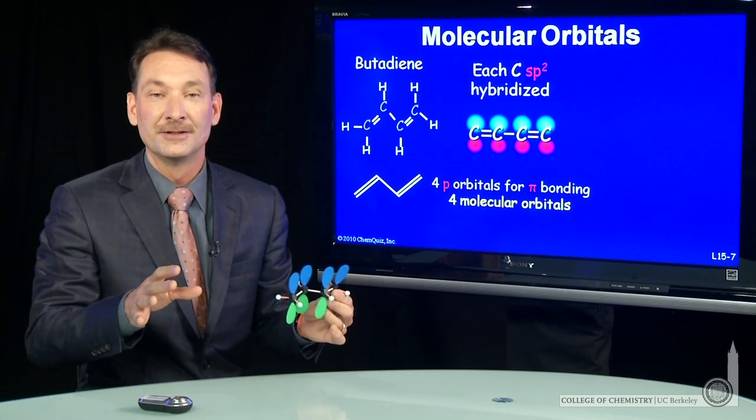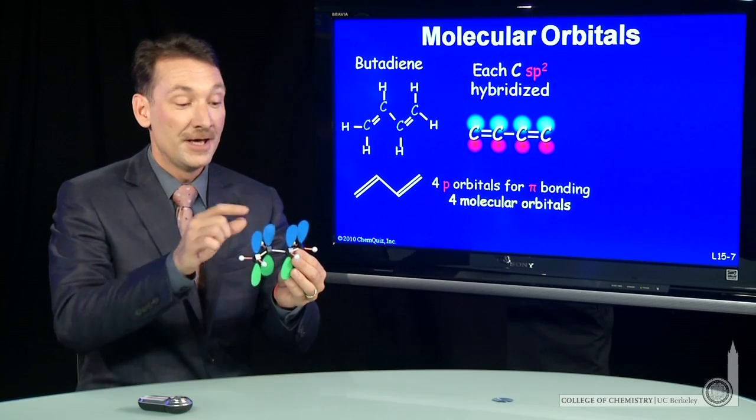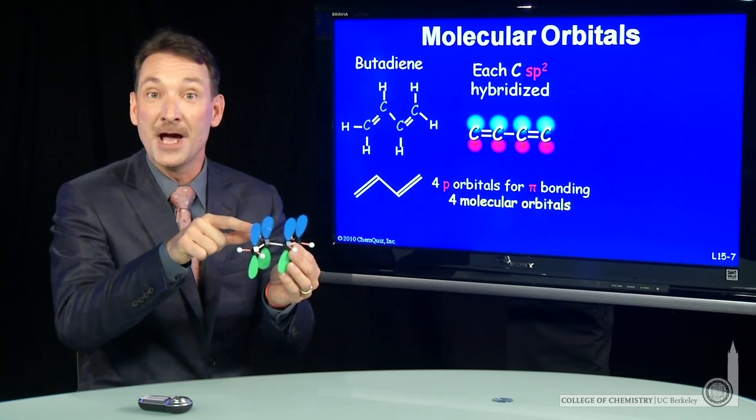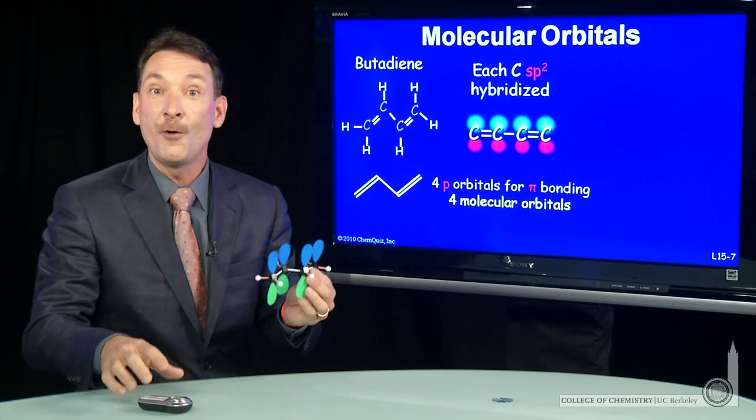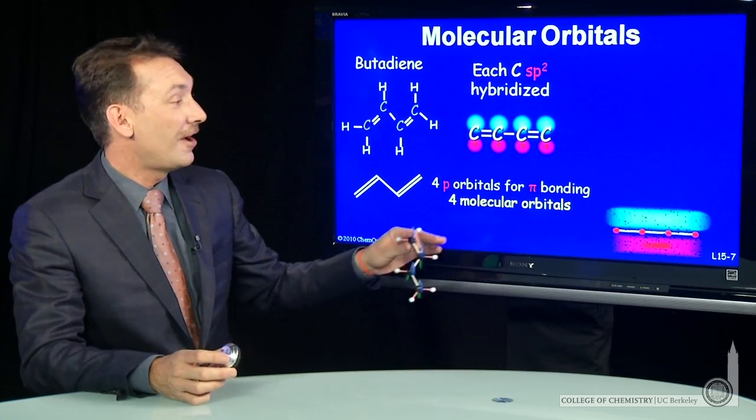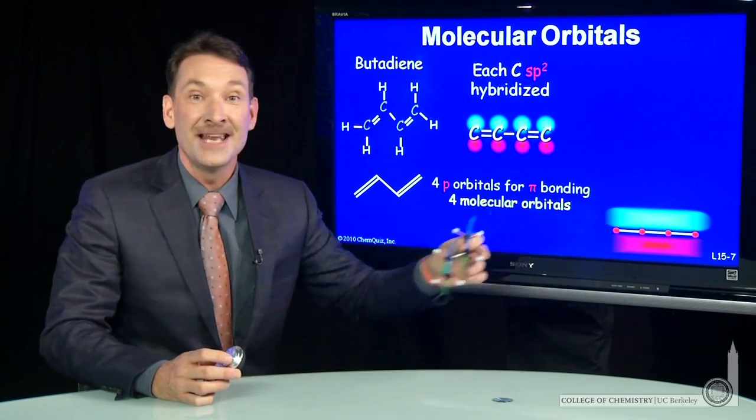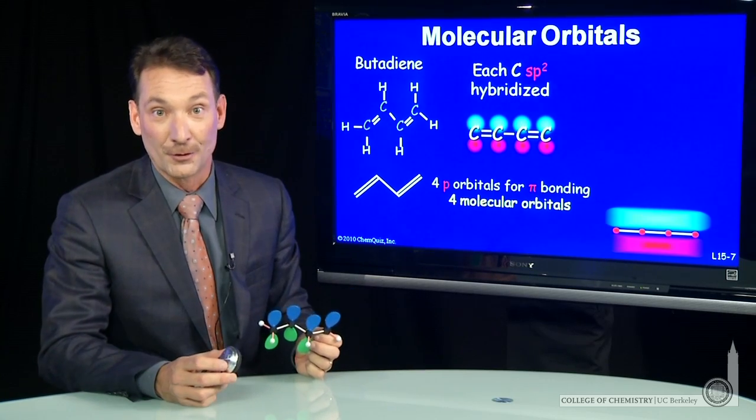And now this is going to be interesting, because the orbital that I form, rather than just spanning two atoms, can span four atoms. So I'll form a molecular orbital that looks like this, a long, extended, delocalized orbital.